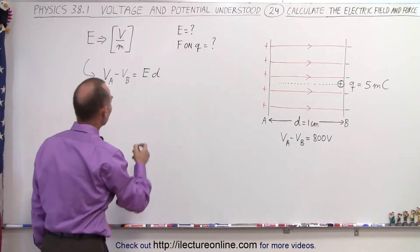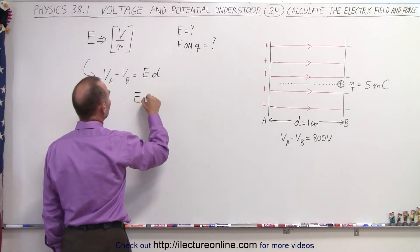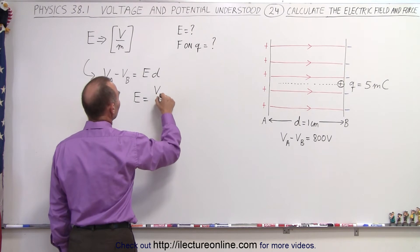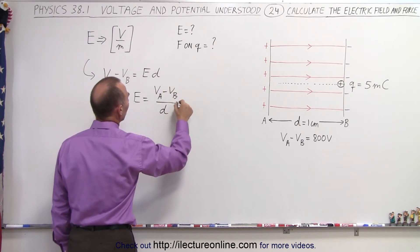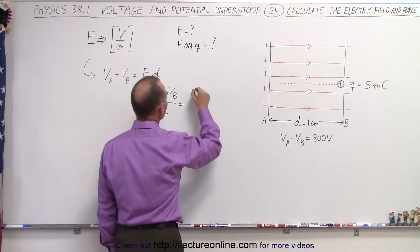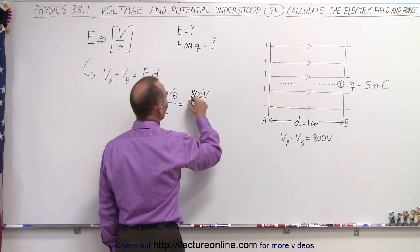From that we can then say that the electric field is equal to the potential difference V_A minus V_B divided by the distance, so in this case that's going to be 800 volts divided by 0.01 meter.